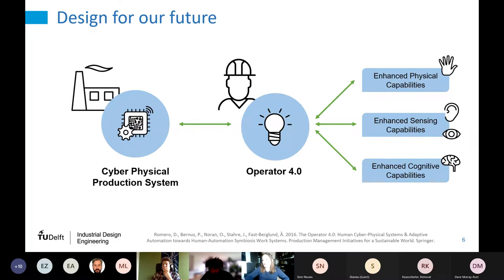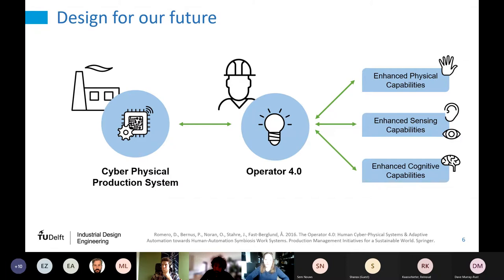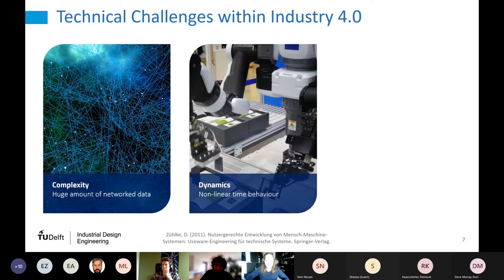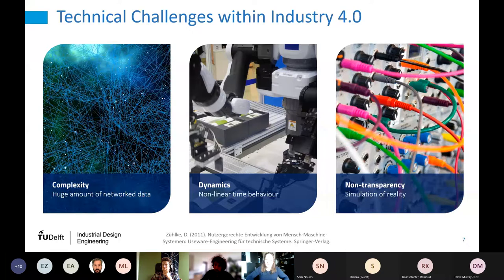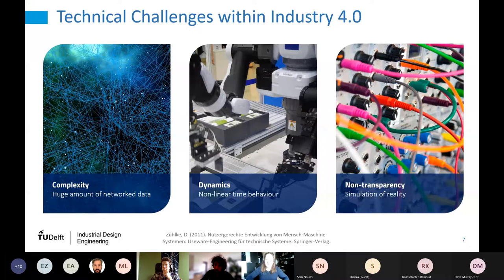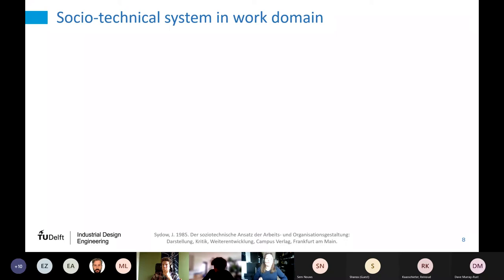We use augmented and virtual reality to improve sensing capabilities and also cognitive capabilities, though you can also envision different functions beyond AR/VR in these two realms. There are important technical challenges to understand: complexity, dynamics where stuff is nonlinear, and a non-transparent manufacturing environment. These challenges are very much discussed in the manufacturing and robotics domain.